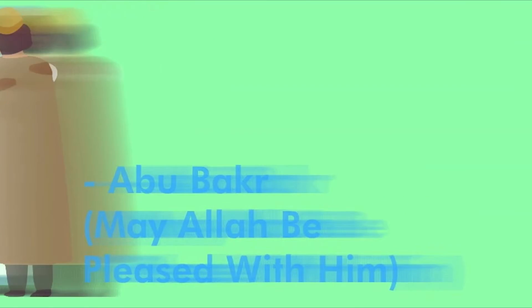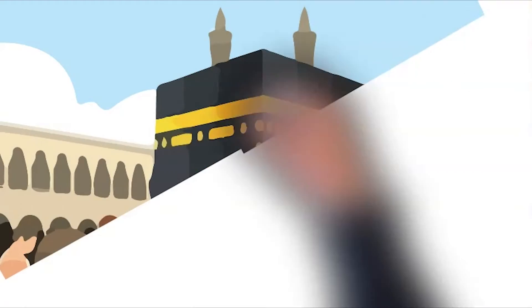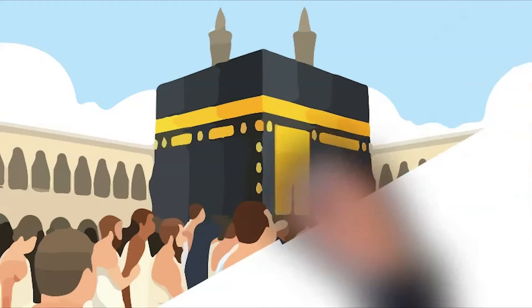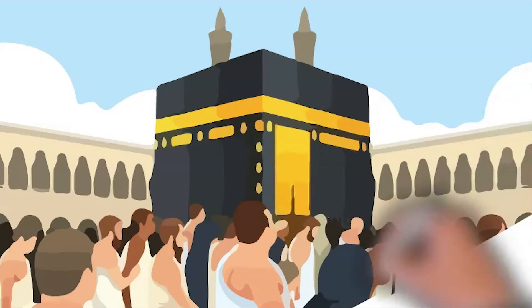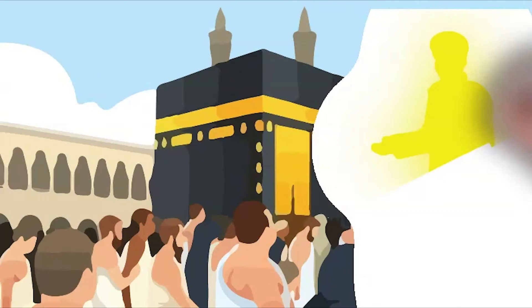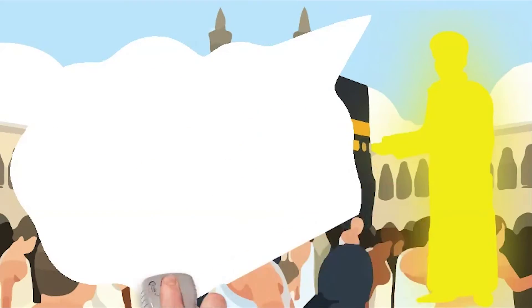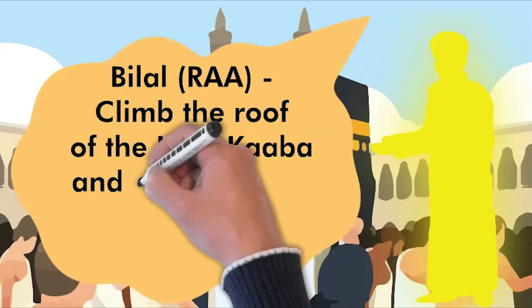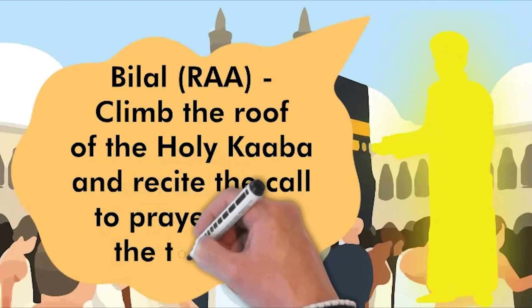As the first African American to embrace Islam, Bilal was given great honor. For instance, the conquest of Mecca in the 8th Hijri calendar, the city surrendered and all the nobles from the Muslims and non-Muslims stood in the courtyard. The Holy Prophet, peace be upon him, asked Bilal to climb the roof of the Holy Kaaba and recite the call to prayer from the top of it.